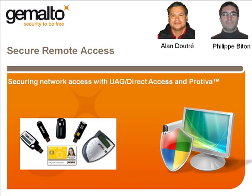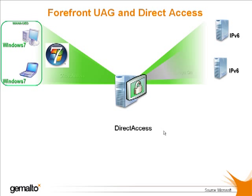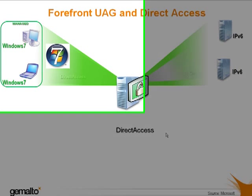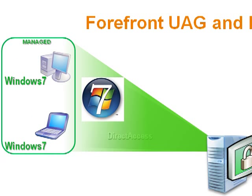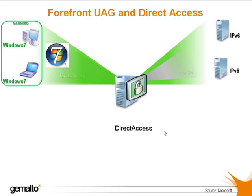Before we go any further, let's remind ourselves how UAG and Direct Access complement each other. Direct Access is a new feature of Windows 7 and Windows Server 2008. It has the same purpose as a VPN, i.e. it allows users to connect securely to the corporate network through the Internet, but the main difference is that the connection is established in the background without requiring user interaction.